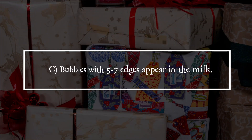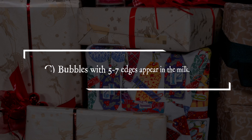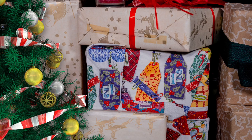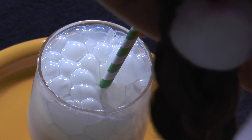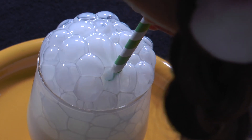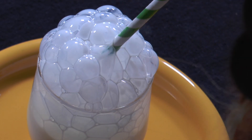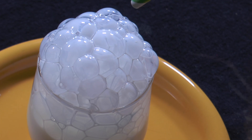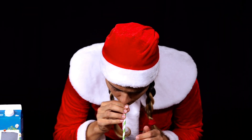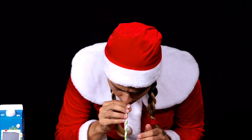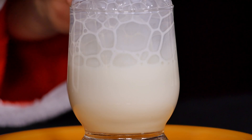It is answer C. Bubbles with 5 to 7 edges form in the milk. Milk consists of small fat globules that are kept in emulsion by proteins, so fat and water in the milk do not separate. If you blow into the milk through a straw,